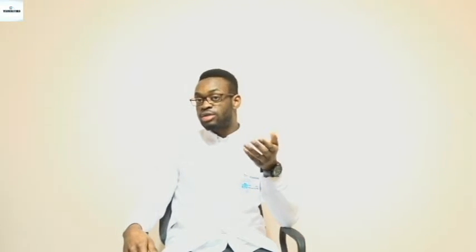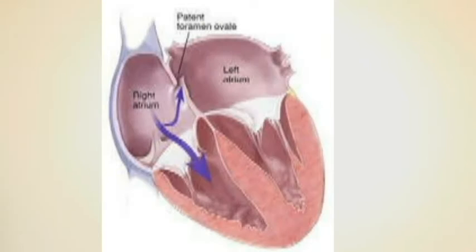This mixed blood goes further and travels towards the heart. Like in any other heart, the superior and inferior vena cava meet in the right atrium. In the right atrium, we have a further mix of oxygenated and deoxygenated blood from the inferior and superior vena cava. Once the blood gets to the right atrium, there are two possible pathways for its movement.